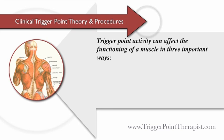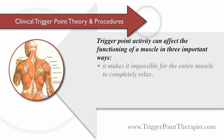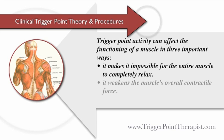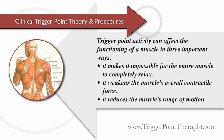Trigger point activity can affect the functioning of a muscle in three important ways. First, it makes it impossible for the entire muscle to completely relax. Second, it weakens the muscle's overall contractile force. And third, it reduces the muscle's range of motion.